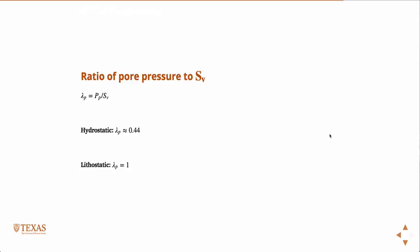Sometimes we use this parameter lambda to represent the ratio of the pore pressure to the vertical stress. That will be 0.44, because remember the vertical stress is like 1 psi per foot. So you're just dividing the pore pressure — which is 0.44 psi per foot — by 1 psi per foot. The units cancel and you get 0.44.